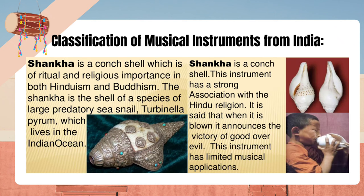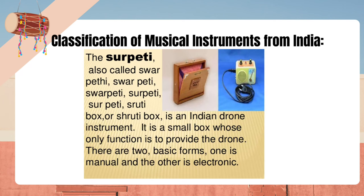Shankha is a conch shell of ritual and religious importance in both Hinduism and Buddhism. It is the shell of a species of large predatory sea snail, Turbinella pyrum, which lives in the Indian Ocean. It is said that when it is blown, it announces the victory of good over evil, though it has limited musical applications. The Shruti box, also called Swarpeti or Serpati, is an Indian drone instrument — a small box whose only function is to provide the drone. There are two basic forms: one is manual and the other is electronic.